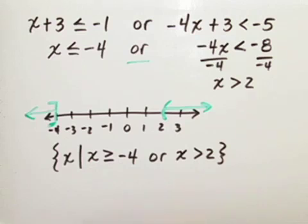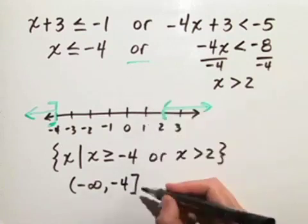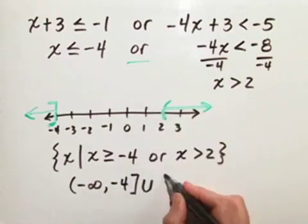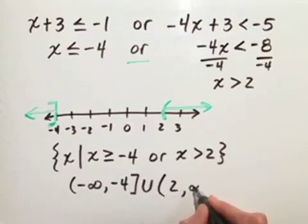The interval notation can be written by starting at negative infinity all the way to and including negative 4. Because we have the word OR, we must write the union symbol from 2, but not including 2, so we use parentheses, to positive infinity.